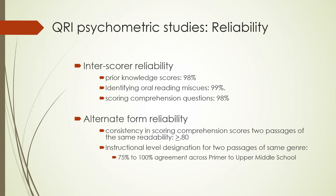Now let's take a look at the QRI. Interscorer reliability is a very important part of establishing the reliability with which two different people will obtain the same score. In checking scoring on prior knowledge, agreement was 98% — that's outstanding. Identifying oral reading miscues between two different scorers was 99%, and scoring comprehension questions was 98%. You can be confident that the QRI has excellent inter-reader reliability and that once you are trained to use it, you will score with reliability.